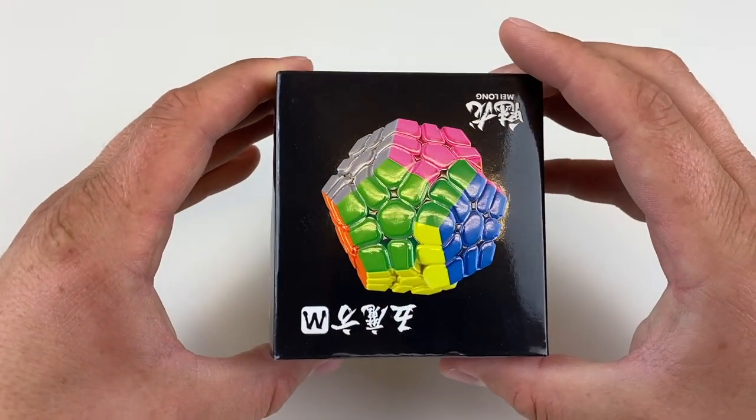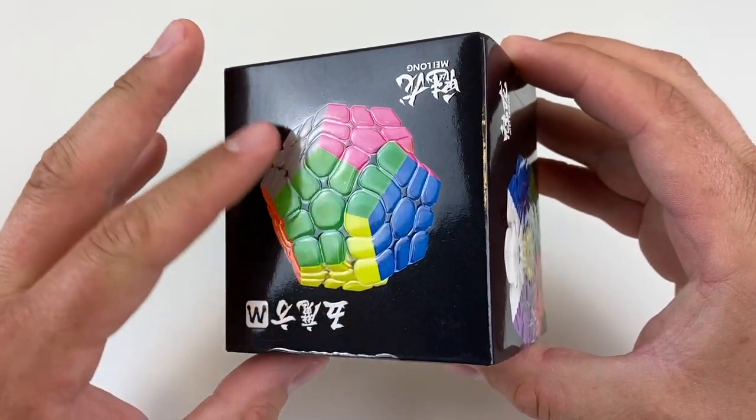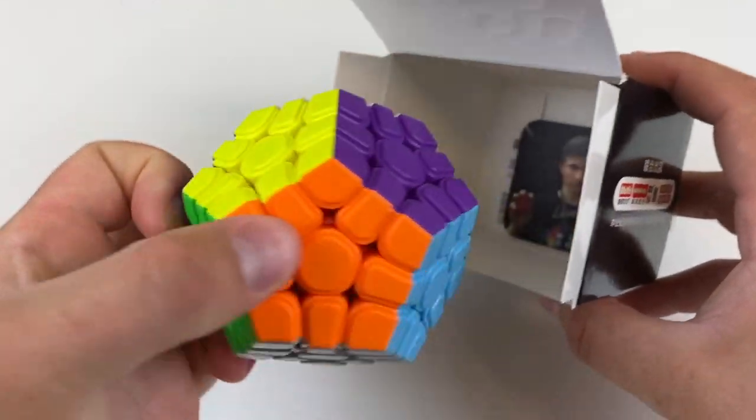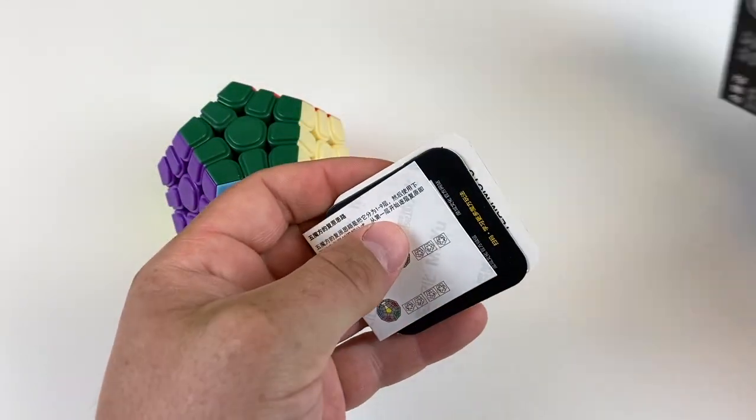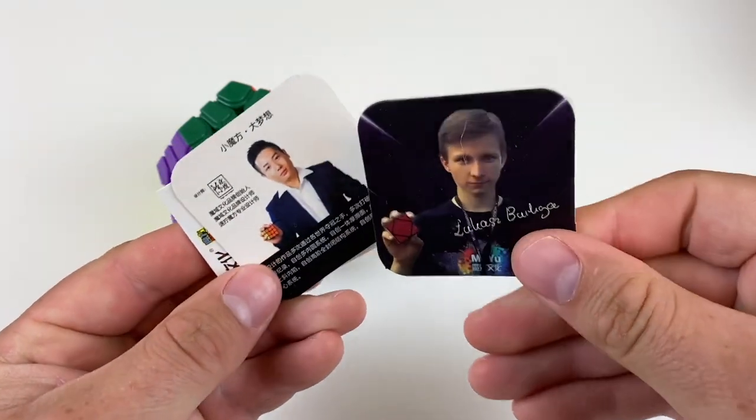First up, I have the new MeiLong Magnetic Megaminx. The box shows the puzzle and it has some raised art, which I like. Inside, we're presented with the Megaminx and some fun Moyu collector cards. Nice. I don't have this one, so I better add it to my collection.